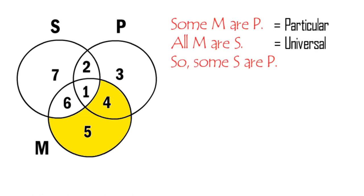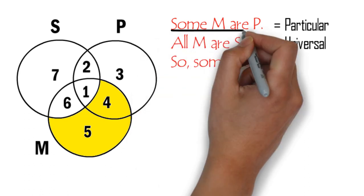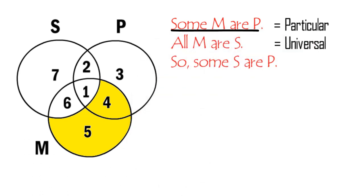Now let us proceed to diagram the particular premise: some M are P. Since this is a particular proposition, we will not use the shading method; instead, we will place an X on the designated area. Since area 4 is already shaded and does not exist anymore, we will place the X on area 1 to show that there is at least one member of M that is a member of P. The Venn Diagram of the syllogism now looks like this.